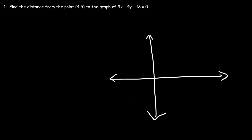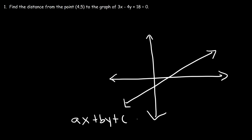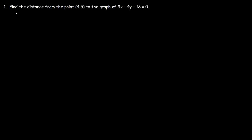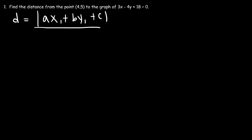So let's say if we have a graph, and this is just some generic equation. So let's say this is a line, and the formula is ax plus by plus c is equal to zero. And we have some point x comma y. The distance formula will give us the perpendicular distance between that point and the line. So we need to calculate this distance d. The formula that we need is d is equal to the absolute value of ax1 plus by1 plus c, divided by the square root of a squared plus b squared.